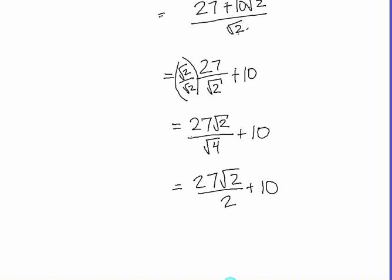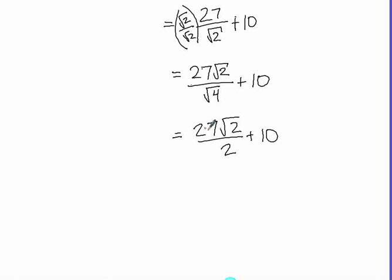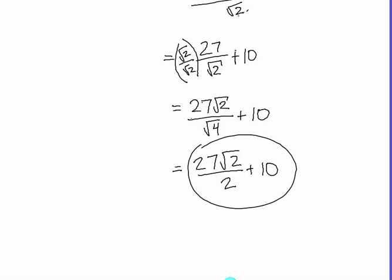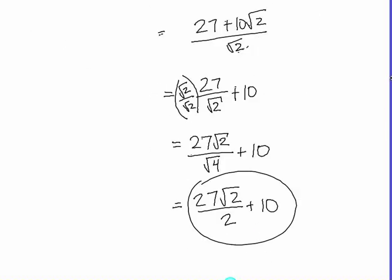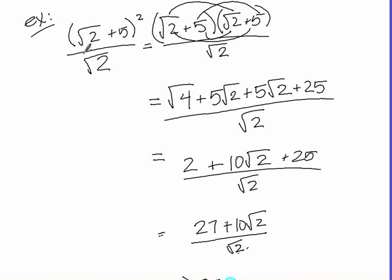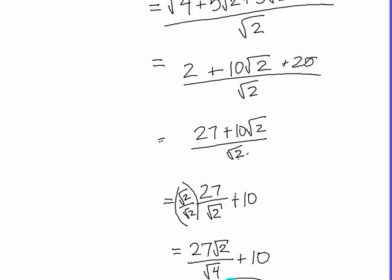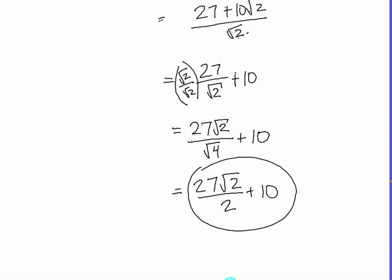The square root of four in the denominator is just two, so the fraction becomes 27√2 over 2, plus 10. That is the most simplified version. You could convert it to a decimal, but I'd prefer to leave it as a fraction. Since the answer contains a radical, this would be classified as one of the irrational numbers — more specifically, it's one of the real algebraic numbers.